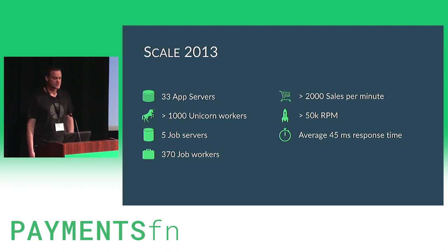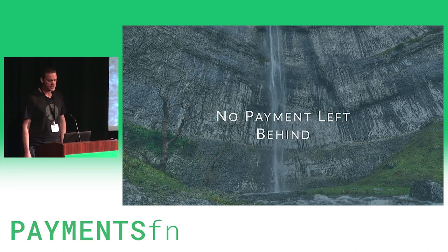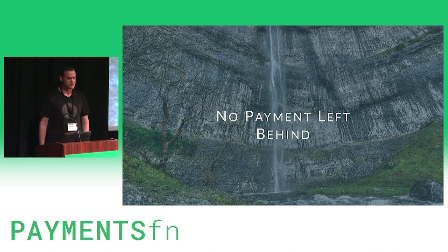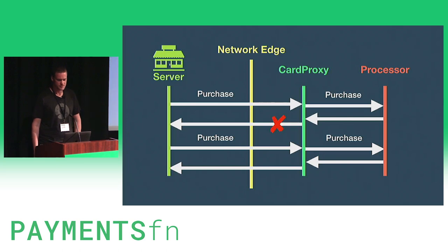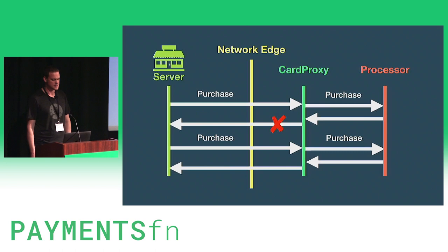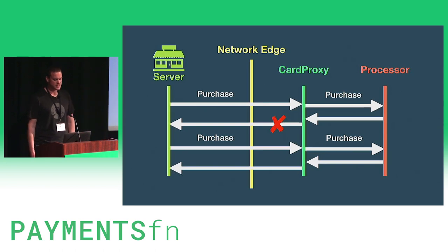There were two issues we needed to fix: reduce the app server workload and ensure we didn't lose any payments. When working with money, you should base your infrastructure on idempotent operations as much as possible. This way, your client can be dumb and retry operations without creating extra charges. Here's an example of where you might end up with a duplicate payment. The server makes a payment request to CardProxy, which makes the request to the payment processor. Before the response returns to the server, there's a timeout or some other failure, but the payment went through on the processor. Now the user tries making another payment, which goes through as well, and now they've paid twice.